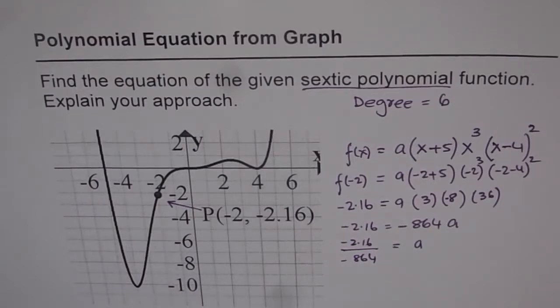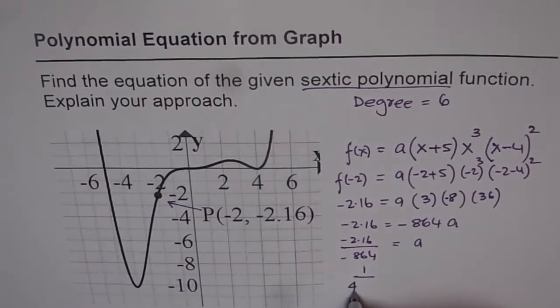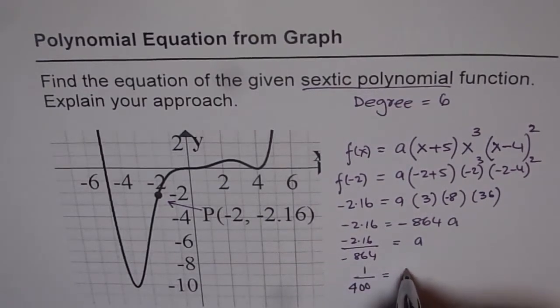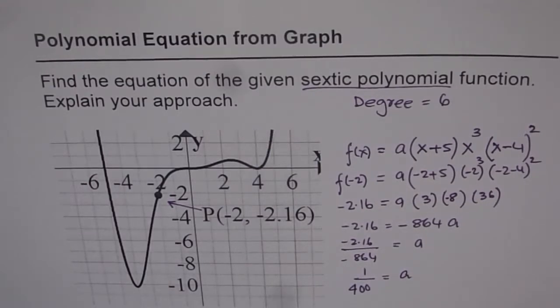2.16 divided by 864 and we get 1 over 400. So we get 1 over 400 as a value of a right. So a is 1 over 400 for us.